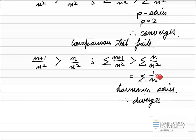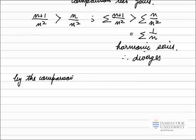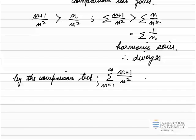In this case, the series which is smaller diverges — it adds up to infinity — so therefore the larger series must also add up to infinity, and the larger series must diverge. This is now the correct choice for our series to compare to. By the comparison test, the sum from n equals 1 to infinity of n plus 1 over n squared diverges.